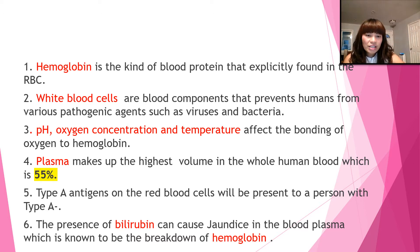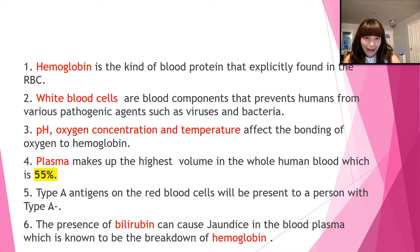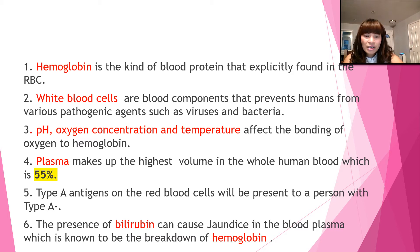Number three: pH, oxygen concentration, and temperature affect the bonding of oxygen to hemoglobin. Number four: plasma makes up the highest volume in the whole human blood, which is 55%. Number five: type A antigens on the red blood cells will be present in a person who has type A negative blood.